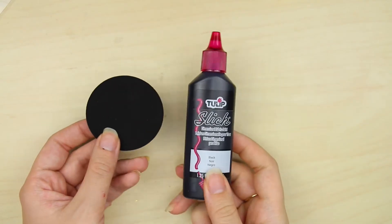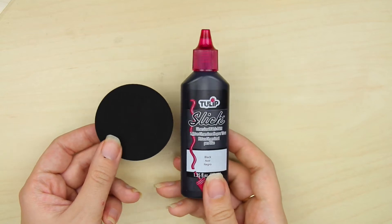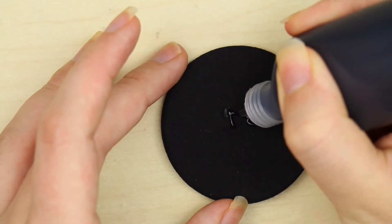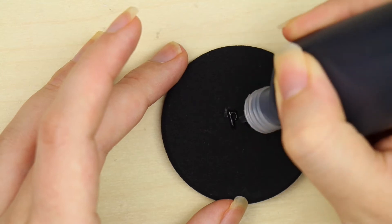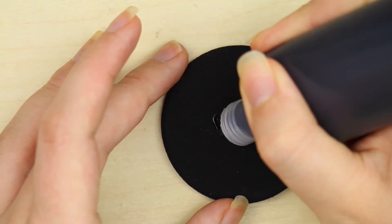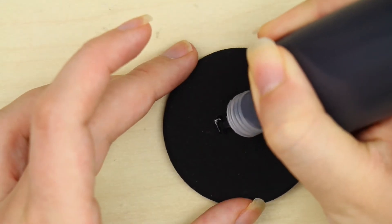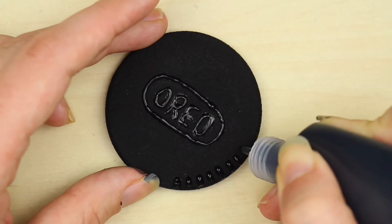To create the famous Oreo design, simply use some black 3D puffy paint. Don't worry if you're like me and bad at drawing. The only part where I tried to stay true to the original was the word Oreo in the middle and the edges.